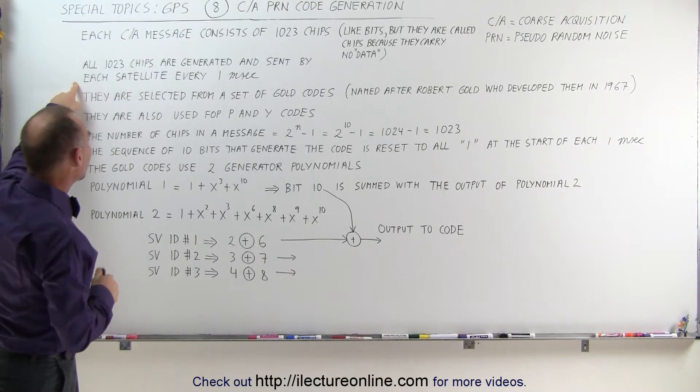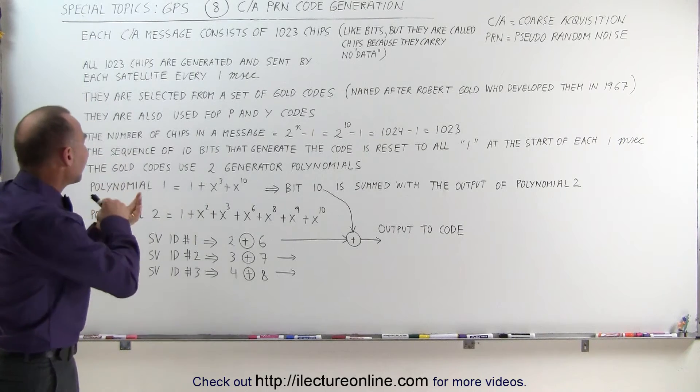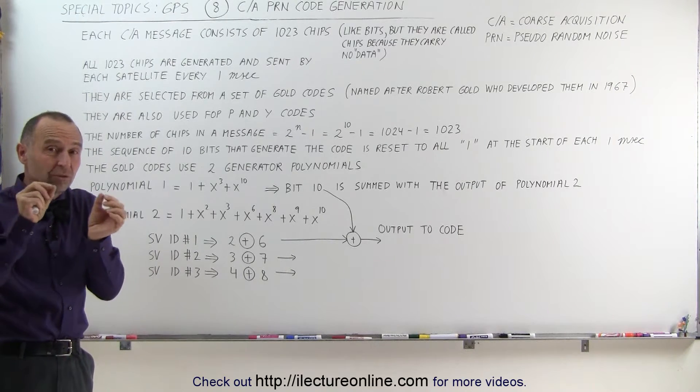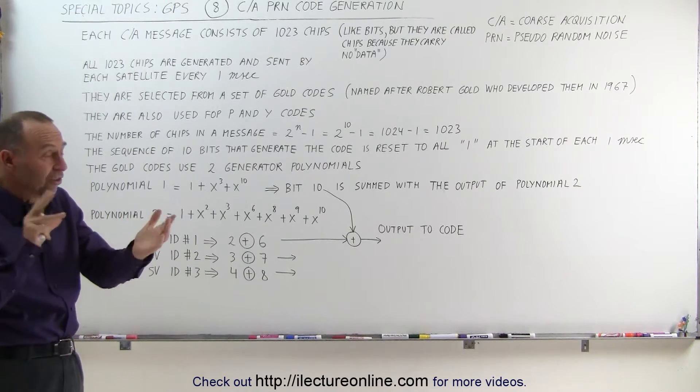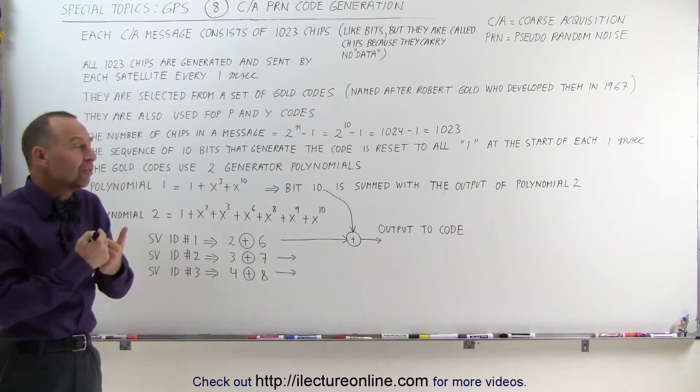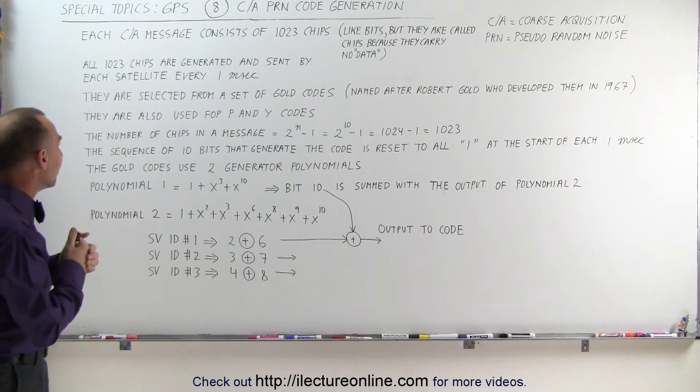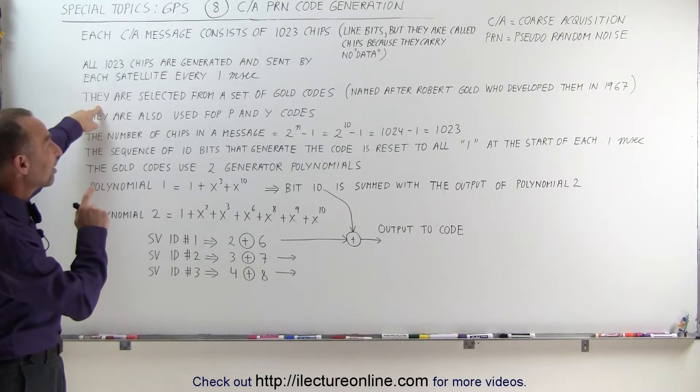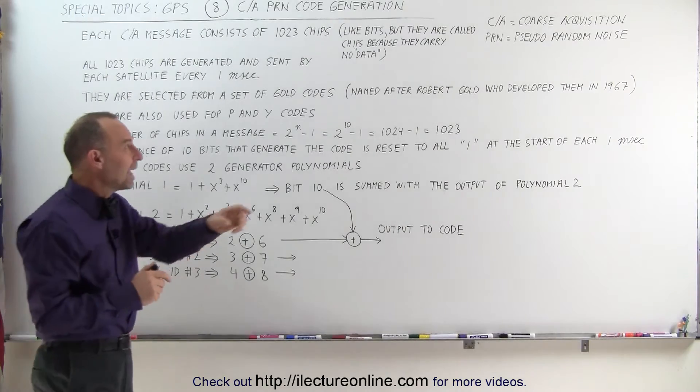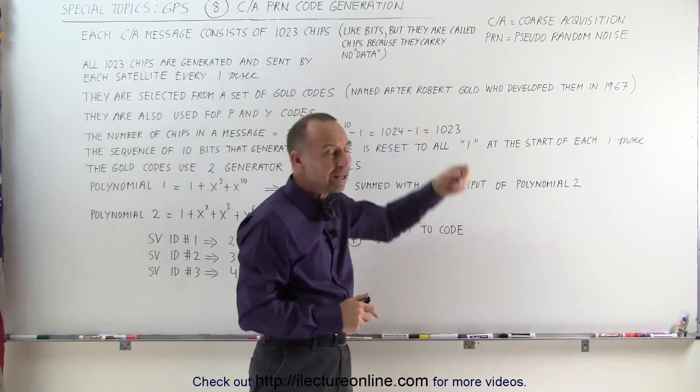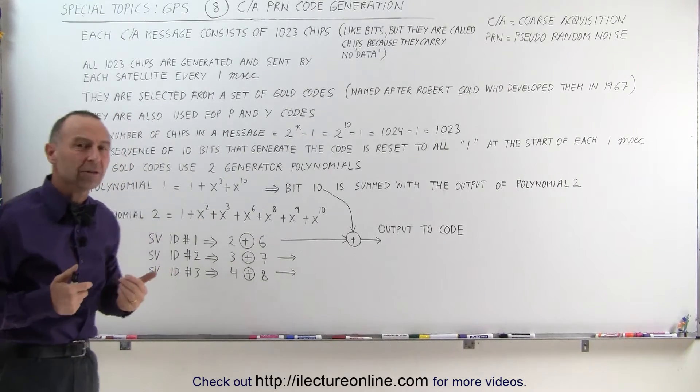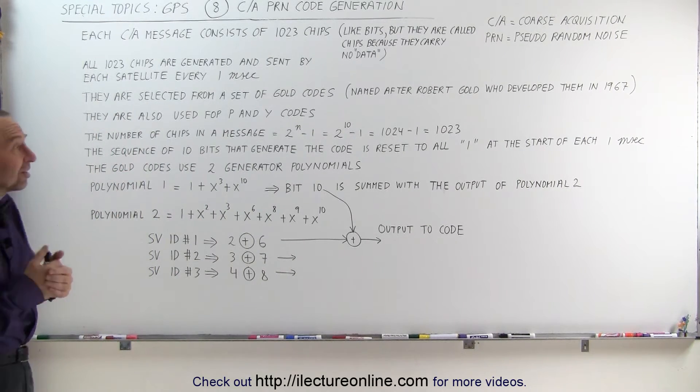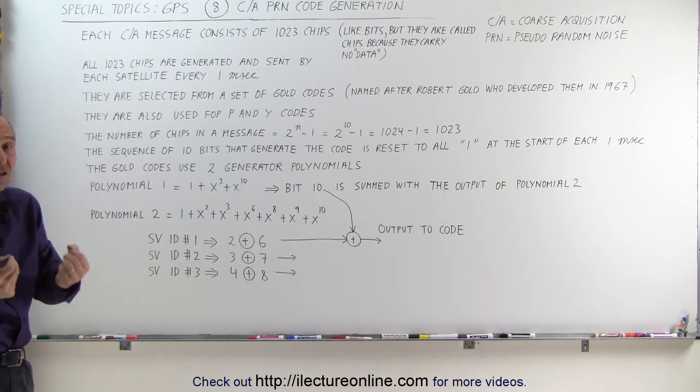All of the 1,023 chips are generated and sent by each satellite every one millisecond. So every millisecond, all 1,023 chips or bits or zeros and ones are sent in a package from each satellite for receivers to receive them. And they're selected from a set of GOLD codes. Now, this is the key. Someone named Robert GOLD developed this system of putting a code together, the pseudo-random noise code together. And he did that all the way back in 1967 and is a technique that is still in use today.